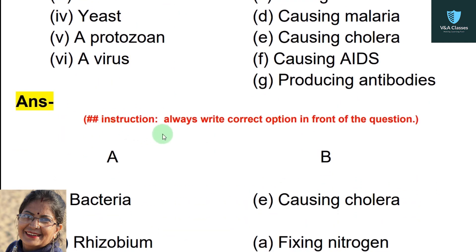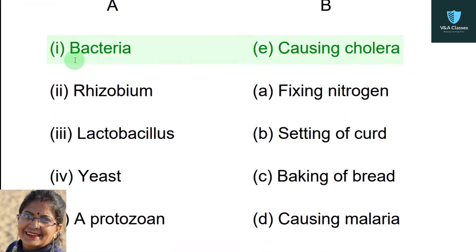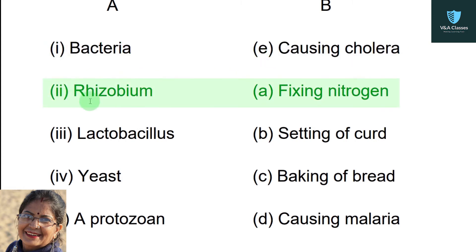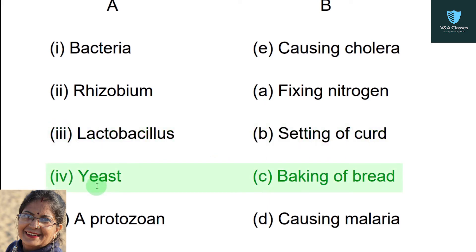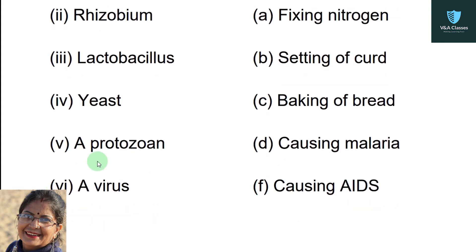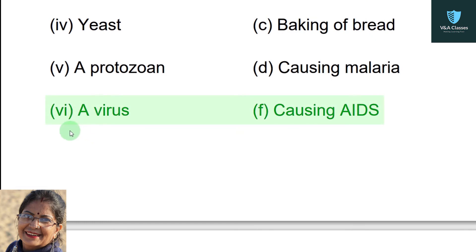Always write the correct option in front of the question. Bacteria — causing cholera. Rhizobium — fixing nitrogen. Lactobacillus — setting of curd. Yeast — baking of bread. A protozoan — causing malaria. A virus — causing AIDS.